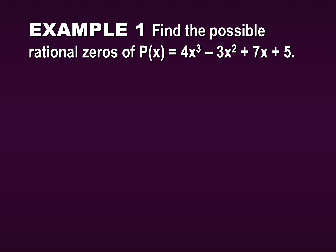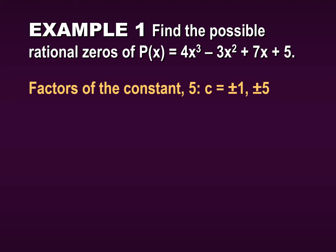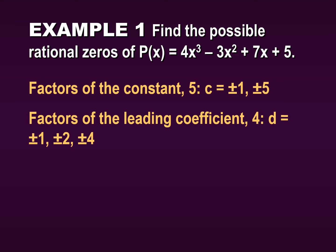Let's find possible rational zeros of p(x) equals 4x cubed minus 3x squared plus 7x plus 5. According to what we just said, our numerator needs to be factors of our constant term, 5. So factors of 5 would be plus or minus 1 and plus or minus 5. And for our denominator, we want factors of our leading coefficient, which is 4.